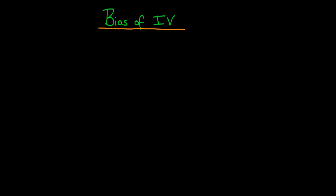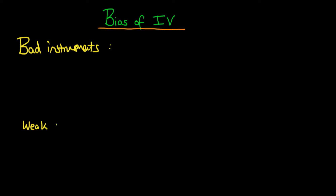In this video, I want to talk about the finite sample bias of instrumental variables estimators. The first problem we're going to be talking about is the problem of having what we call bad instruments, which I'll define exactly in a few minutes. The second problem is going to be weak instruments, which in principle isn't as bad as having bad instruments, as the name would suggest.